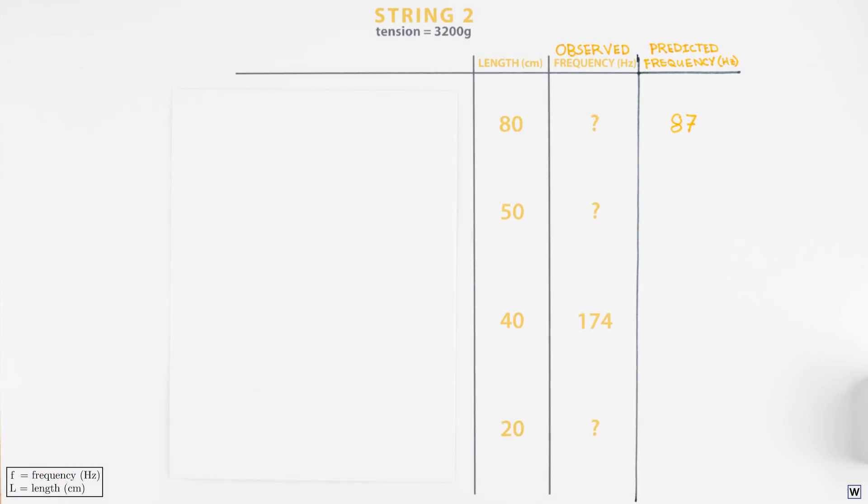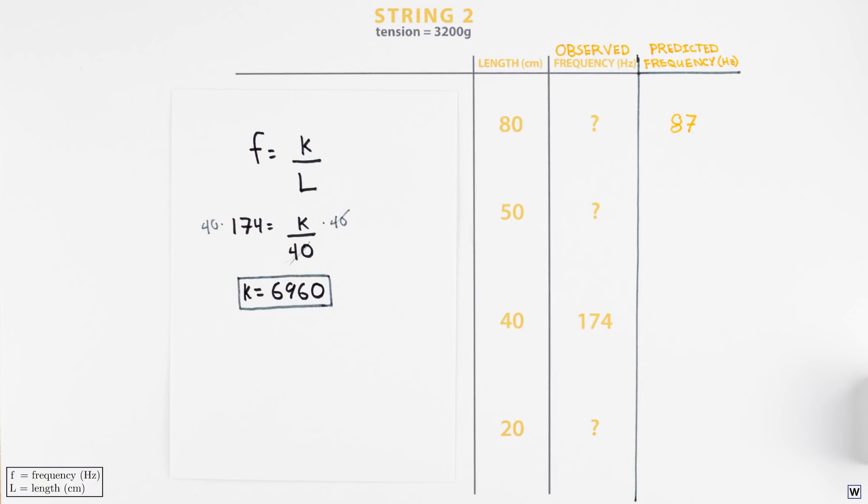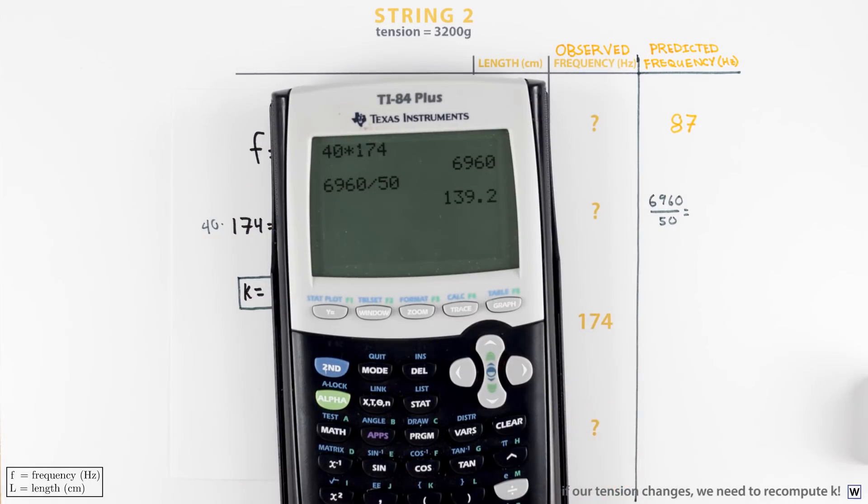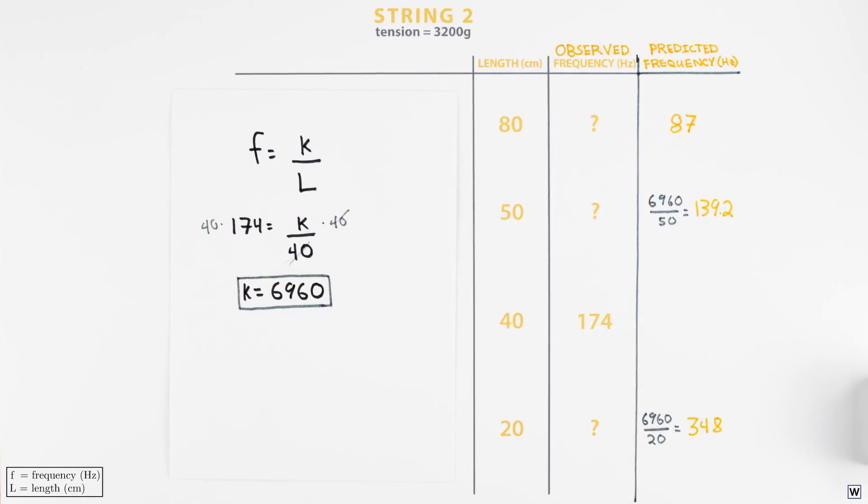We can use our initial string configuration, length equals 40 centimeters and frequency equals 174 hertz, to compute our proportionality constant, k. Now that we have k, we can use it along with our formula to make predictions for our other string lengths at this tension. Plugging in our last two experimental lengths, 50 and 20 centimeters, we compute 139.2 and 348 hertz for our predicted frequencies.